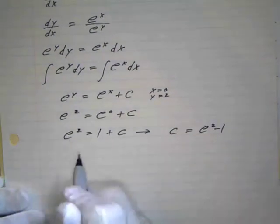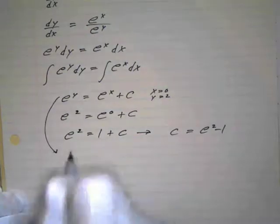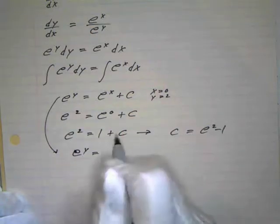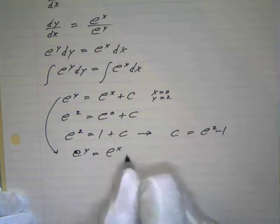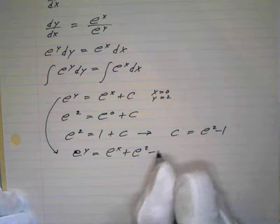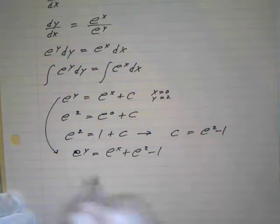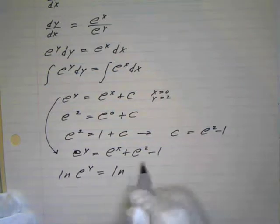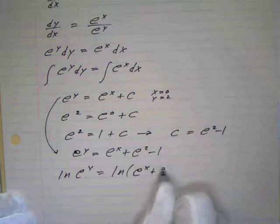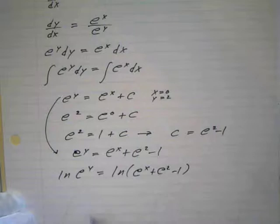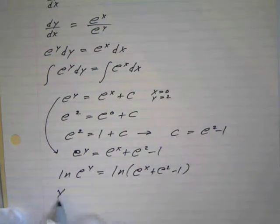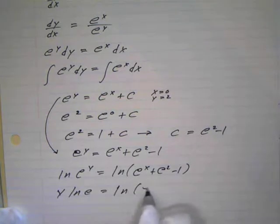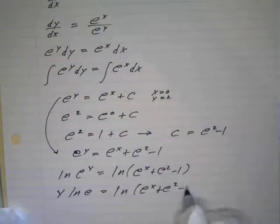That's a constant — it's just easier to leave it as an exact value. So our final solution is e to the y equals e to the x plus e squared minus one. To find y, we take the natural log of both sides: y times the natural log of e equals the natural log of e to the x plus e squared minus one.